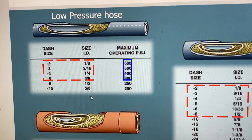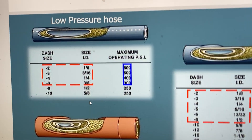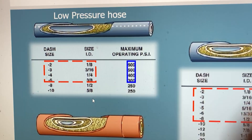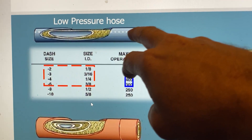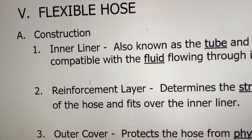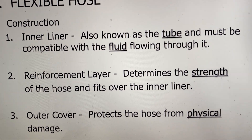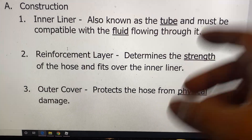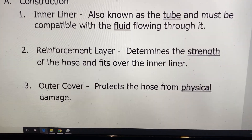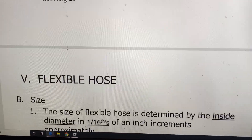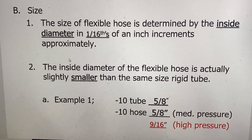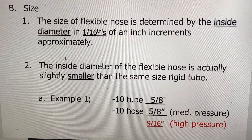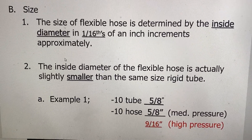There's some type of reinforcement on the inner liner. I compare it to a garden hose — it has an inner liner, cotton reinforcement inside it, and then an outer layer. So the three major parts: the inner liner is what the fluid actually touches, how it's reinforced determines its strength, and the outer cover protects the hose from physical damage like chafing or heat.